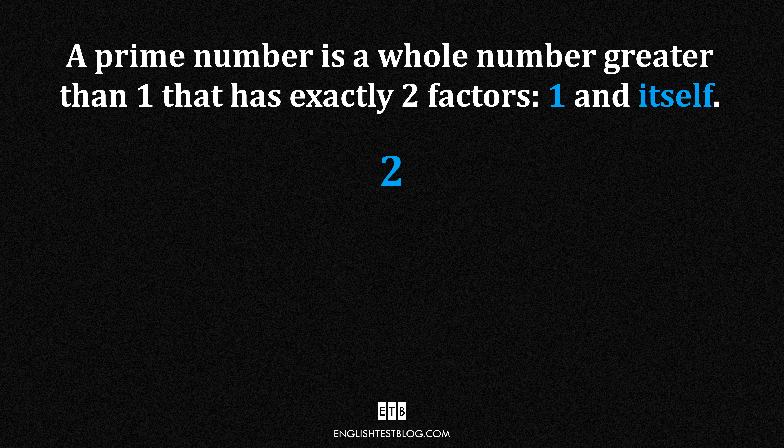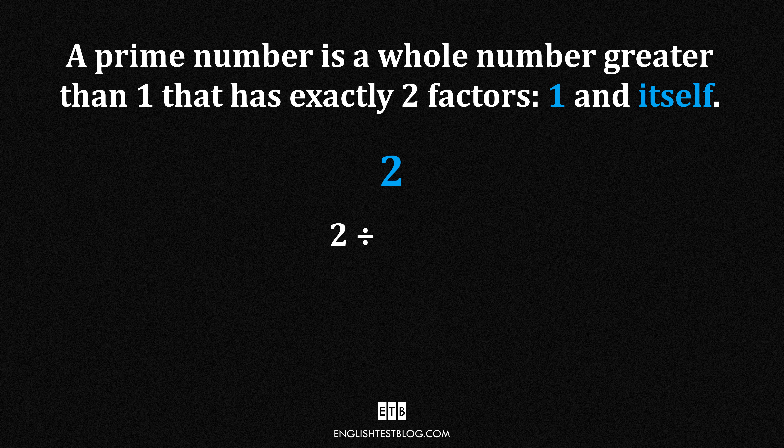Imagine the number 2. Can we divide 2 by anything? Well, 2 divided by 1 equals 2, and 2 divided by 2 equals 1. Any other numbers? Nope. 2 divided by 3 doesn't work, it's not a whole number. So, 2 has just two factors, 1 and 2. That makes 2 a prime number.